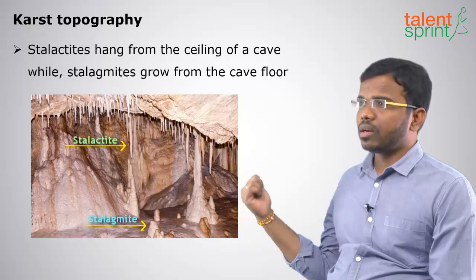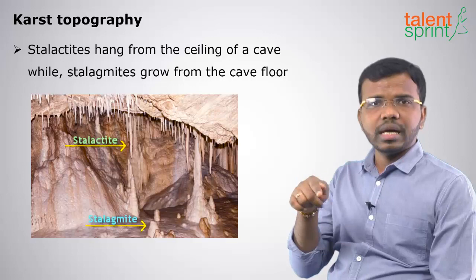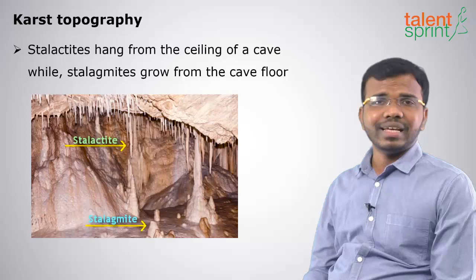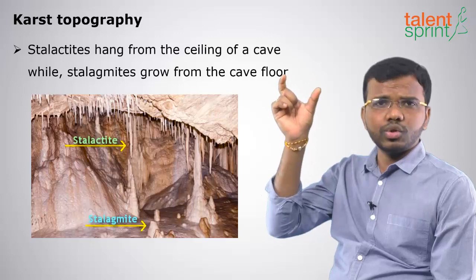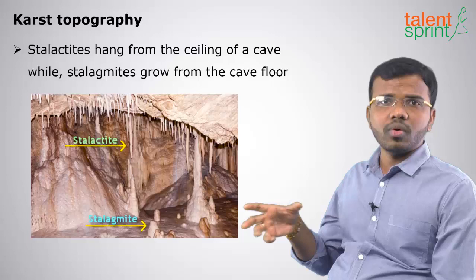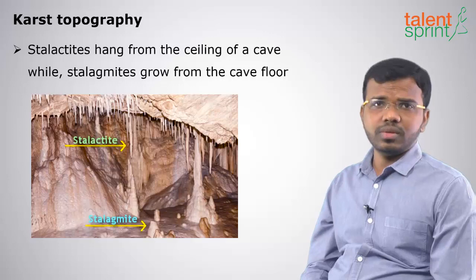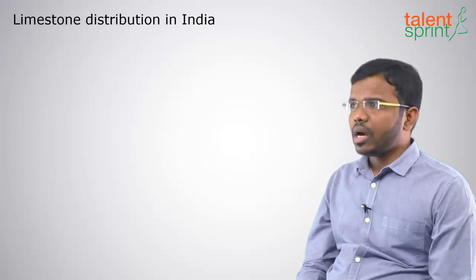To remember the difference: in 'stalagmite,' the letter G stands for ground — so stalagmites are on the ground, and stalactites are the upper ones. The dripping of limestone drops onto the ground and forms stalagmites. So stalactites are on top and stalagmites are at the ground. This type of karst topography is found inside rocks, inside caves, where limestone reacts with water.